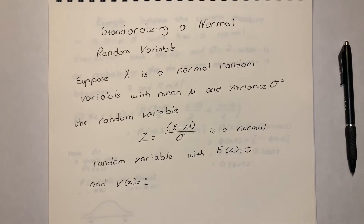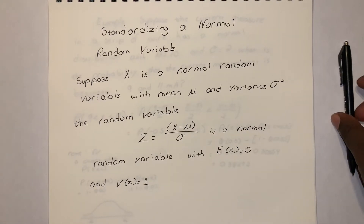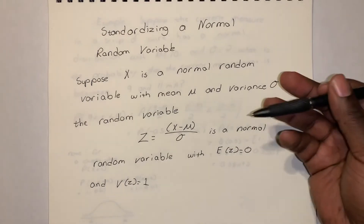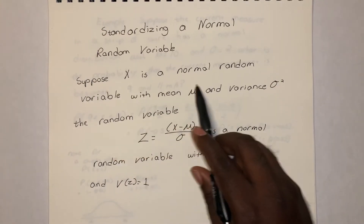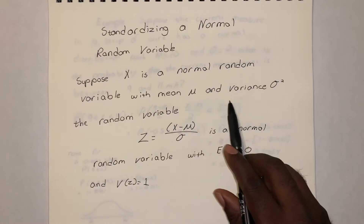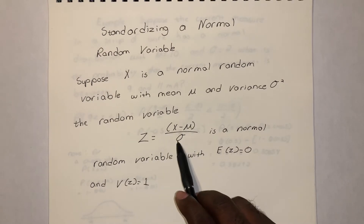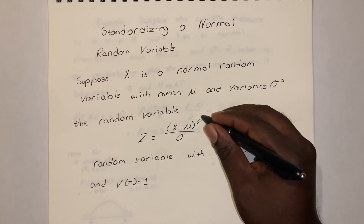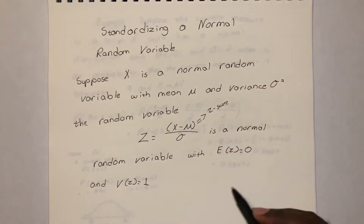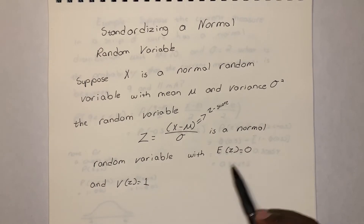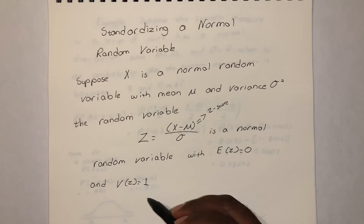Sometimes μ is not zero and σ is not one. In that case, use a Z-score to standardize the normal random variable. If X is a normal random variable with mean μ and variance σ², then Z = (X − μ) / σ is called the Z-score. This standardized variable has expected value E(Z) = 0 and variance Var(Z) = 1.